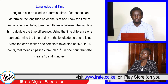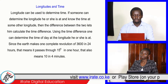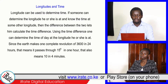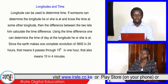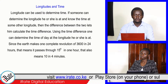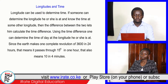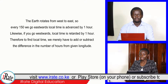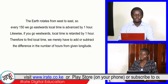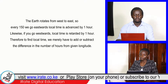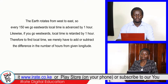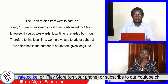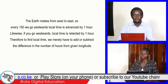Since the earth moves one complete revolution of 360 degrees in 24 hours, that means it passes through 15 degrees in one hour. That also means one degree in four minutes. The earth rotates from west to east, so every 15 degrees we go eastwards, local time advances by one hour. Likewise, if you go westwards, local time is retarded by one hour.